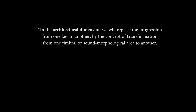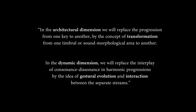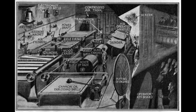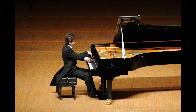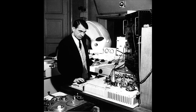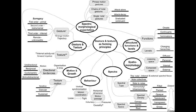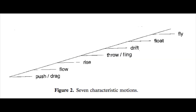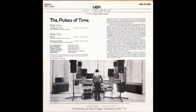So in the architectural dimension, we will replace the progression from one key to another by the concept of transformation from one timbral or sound-morphological area to another. In the dynamic dimension, we will replace the interplay of consonance-dissonance in harmonic progressions by the idea of gestural evolution and interaction between the separate streams. Other sonic dimensions can be added into this interplay, such as the behavior of sound in space, or the recognizability of sound objects — sonic landscape, as put by Wishart — and relating to Denis Smalley's degrees of surrogacy. Smalley, also building on the work of Pierre Schaeffer, defines spectral typologies and proposes morphological archetypes towards a classification of sound objects and sound object behaviors, towards a detailed language and an intuitive way of thinking about sound that takes into account its complex, time-varying nature.